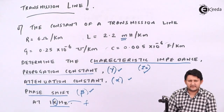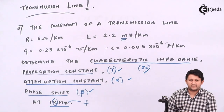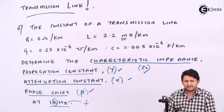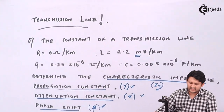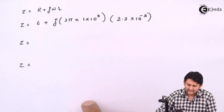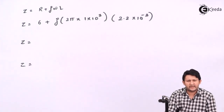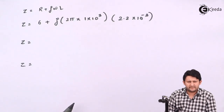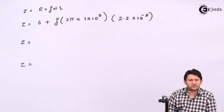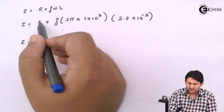Let's start with the impedance. The impedance Z equals R plus jωL, where ω = 2πf. Make sure you have a calculator. Put in the values: R = 6, f = 1 kHz, L = 2.2×10⁻³. The real part is 6.